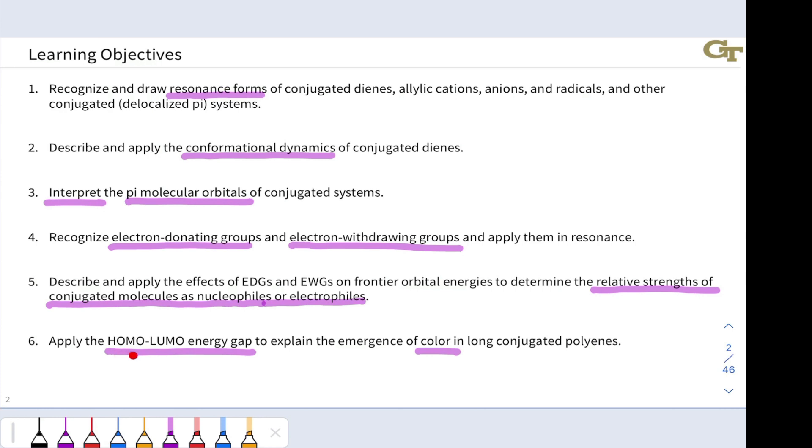And finally, we'll look at that HOMO-LUMO energy gap and see how it relates to the emergence of color in long conjugated polyenes. These are molecules like beta-carotene and retinal and other long conjugated systems, conjugated polymers, where the absorption of visible light becomes a very important process.